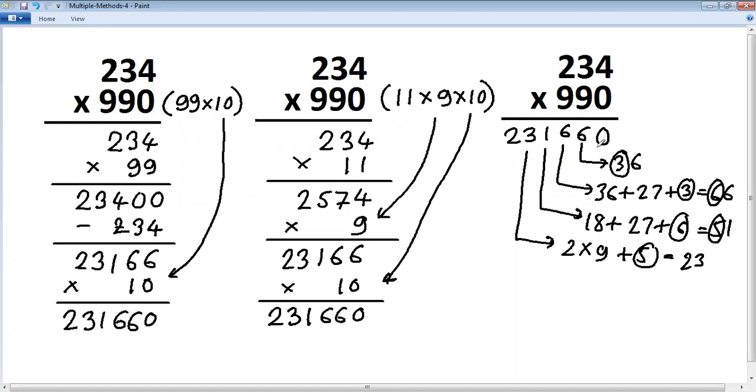So let's solve the same problem using three methods. The first here is series of 9. Here we have used main topic series of 1. This is crisscross. So three different methods to solve the same problem: 234 multiplied by 990. Thank you.